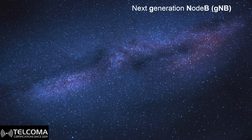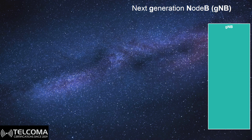Today we will talk about the next generation Node B, or the gNodeB, in 5G. 3GPP Release 15 has introduced a new concept of the gNodeB and Nokia is very vocal about introducing the solutions. The gNodeB is divided into two or three entities, as compared to what we have seen in 4G — the eNodeB was just one entity.